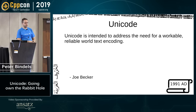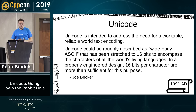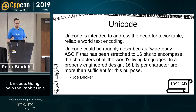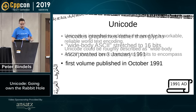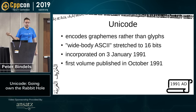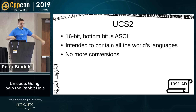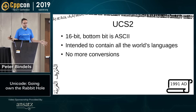Unicode was first incorporated in January 1991 and published as a standard in October 1991. Everything is 16-bit, so UCS-2 takes 16-bit units — the bottom portion is ASCII and it encodes all the world's languages. Joe Becker said: 'Unicode can be roughly described as wide-body ASCII stretched to 16 bits to encode the characters of the world's living languages. In a properly engineered design, 16 bits per character is more than sufficient.' But this wasn't workable because existing standards like email only support 7-bit, so they needed something to transport Unicode over email.